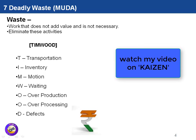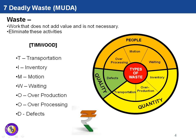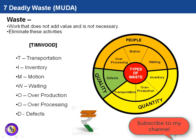To learn about the seven deadly wastes in detail, you can visit my other video on Kaizen — the link is in the description. Now, Muda can also be divided into three types: People Muda, Quality Muda, and Quantity Muda. In People Muda there are three types of waste: over-processing, motion, and waiting. In Quantity Muda there is inventory, overproduction, and transportation. In Quality Muda, there are defects — meaning rework, repair, or rejection.